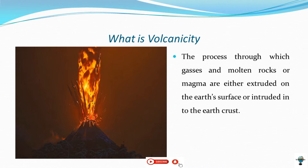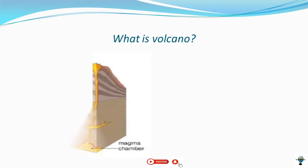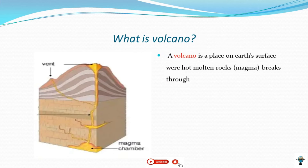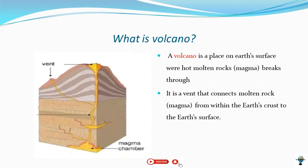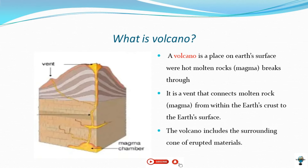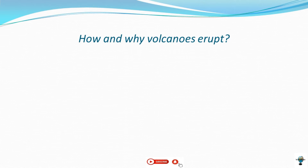When we say volcano, this is the place on the earth's surface where hot molten rocks break through. A volcano is an event that connects molten rocks from depth into the earth's surface, and a volcano includes the surrounding area of ejected materials.